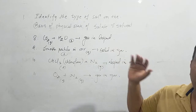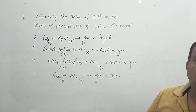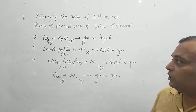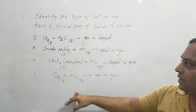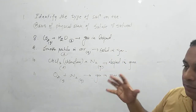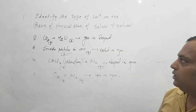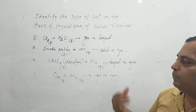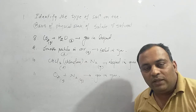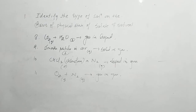So students, we have discussed the topic of types of solutions on the basis of physical state: three types — solid solutions, liquid solutions, and gaseous solutions — further divided into three types each, giving nine types total. We identify which type by looking at solute and solvent states, and we've seen examples for each. That's all about types of solutions on the basis of physical state of solute and solvent.